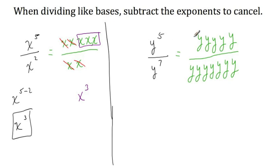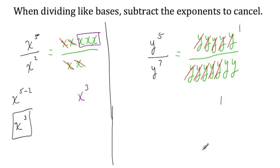Now let's cancel to see what we get. We can cancel these factors, leaving nothing left to cancel in the numerator. If you've canceled everything from either the numerator or the denominator, you're left with one. So this means that when we're all finished, we will have a one in the numerator. In the denominator, there are still two factors of y that didn't get canceled, and we can write that as y squared. This is what the math looks like if you actually use the definition of an exponent and write all your work out.